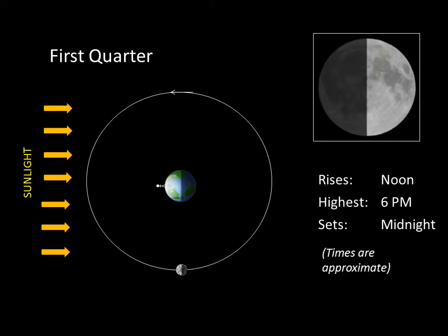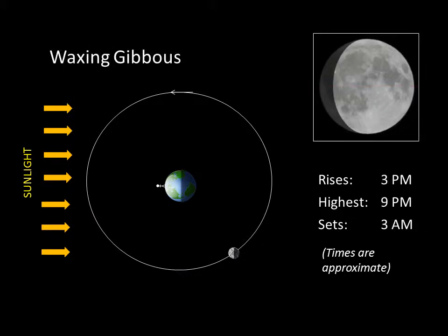A first quarter Moon rises around noon and sets at midnight. This phase is called first quarter because from Earth, we see just a quarter of the Moon. Over the next few days, the Moon continues to wax. After first quarter, we say the Moon is a waxing gibbous Moon. This phase rises in the afternoon and sets in the early morning hours.